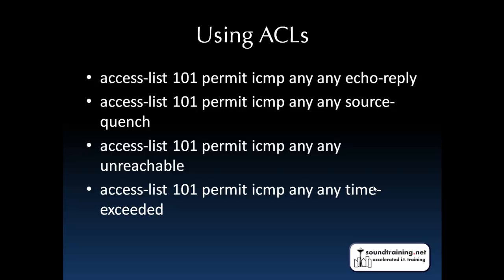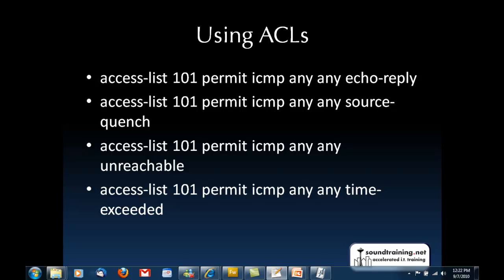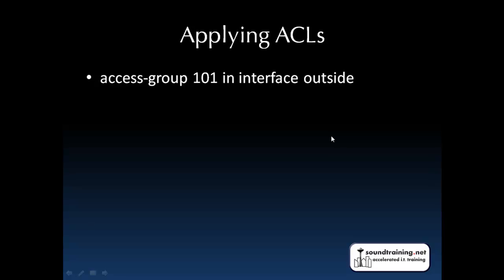When you want to use ACLs, you create the list and then use the access-group statement to apply it. This particular list allows you to ping and traceroute through a firewall from the inside to the outside, which is not allowed by default. To make it work, you enable it on the outside interface using the 'access-group' statement. The name or number has to match what's used in the list — in this case: 'access-group 101 in interface outside.'